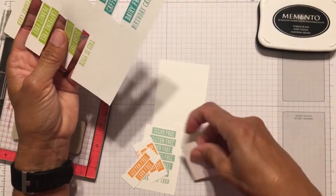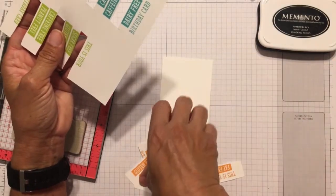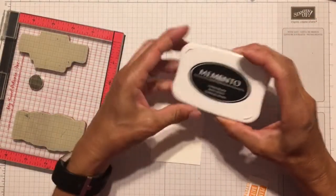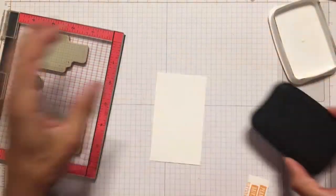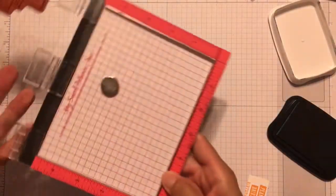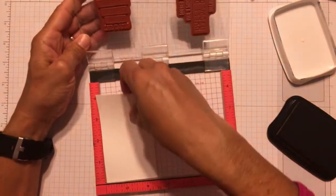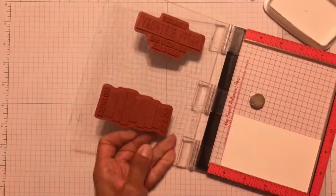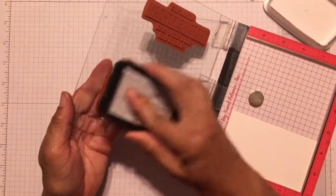Moving on to the stamping. I used my stamp positioner tool because I was stamping this multiple times in different colors. And also because there's a lot of surface area and sometimes it's hard to get a good impression. So that way I can stamp it once and if I don't get a great impression, I can just stamp it again.